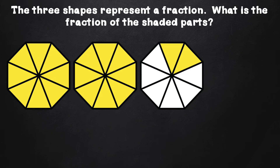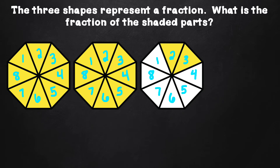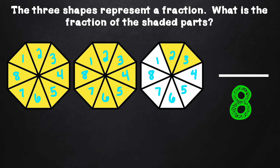Let's look at this example. The three shapes represent a fraction. What is the fraction of the shaded parts? First, let us determine the denominator of the fraction. To determine the denominator, we need to count how many parts the octagons are partitioned into: one, two, three, four, five, six, seven, eight. Since each octagon has eight pieces, the number eight goes in the denominator. Remember that to name the fraction of objects beyond or more than one whole, we look at how many parts one shape or object is partitioned into.